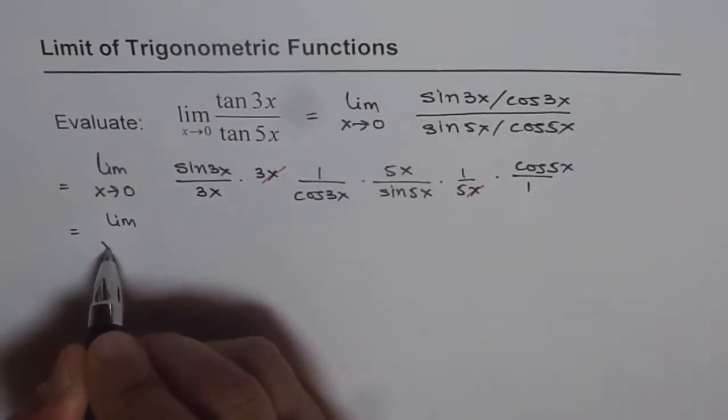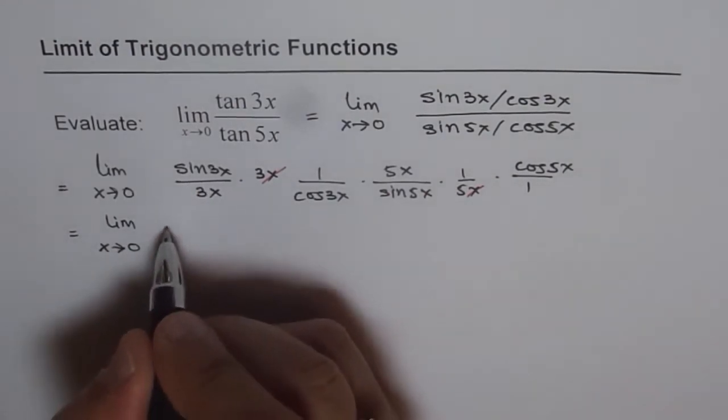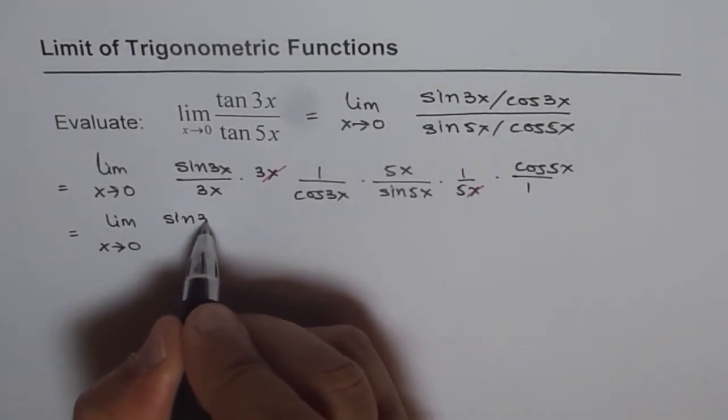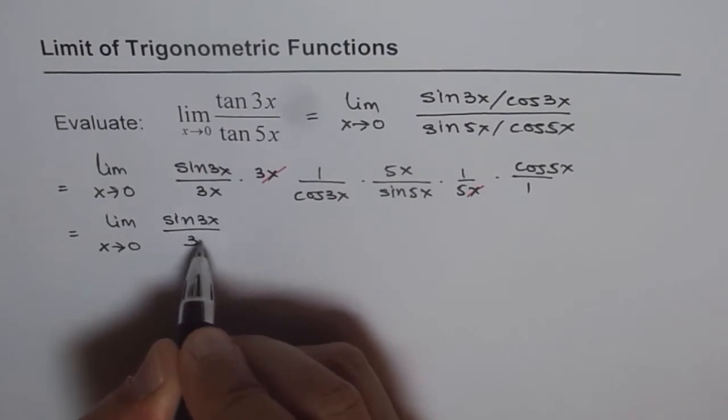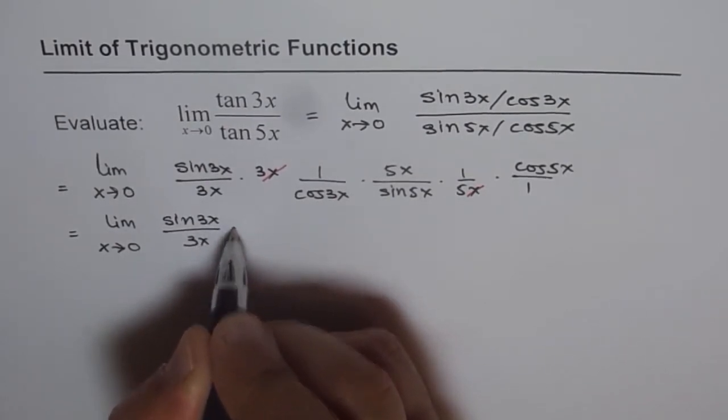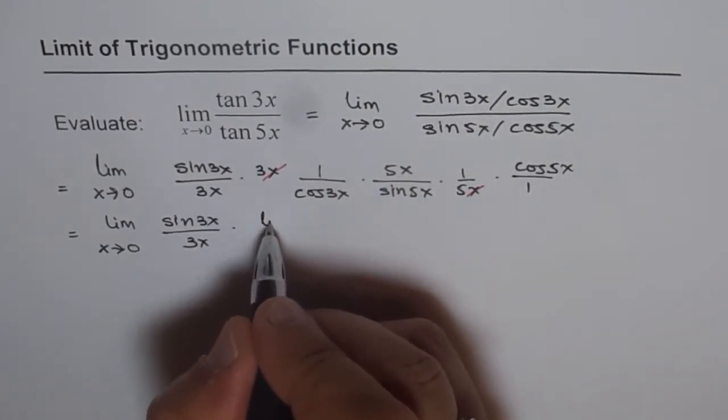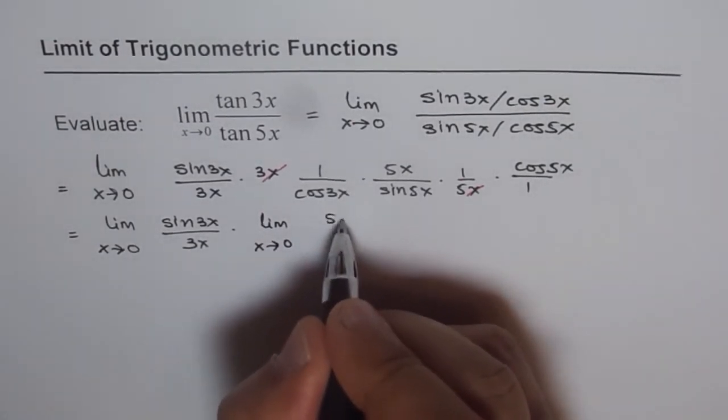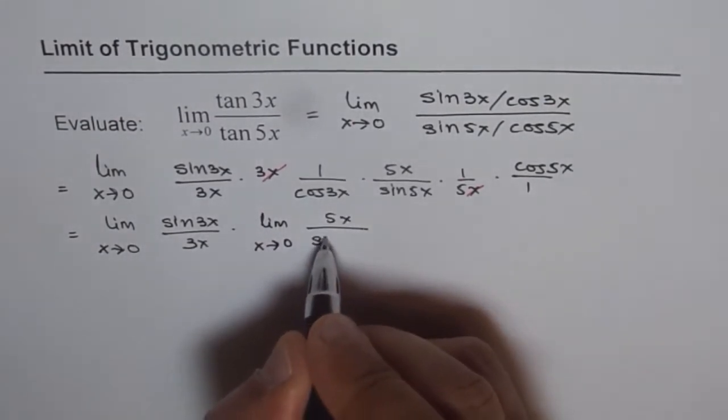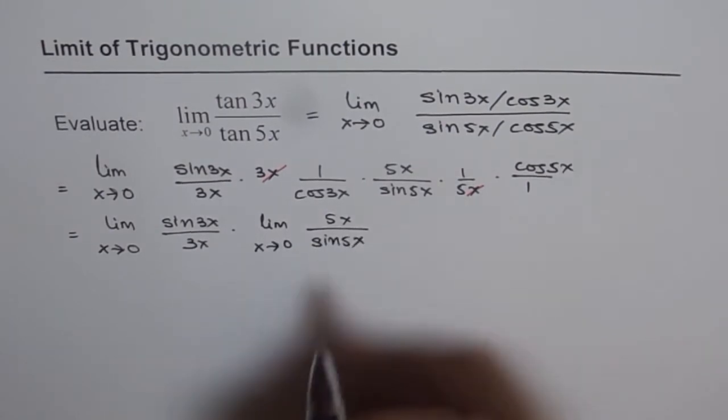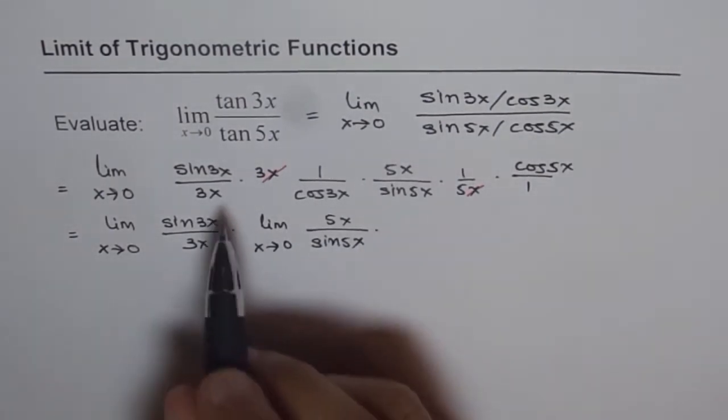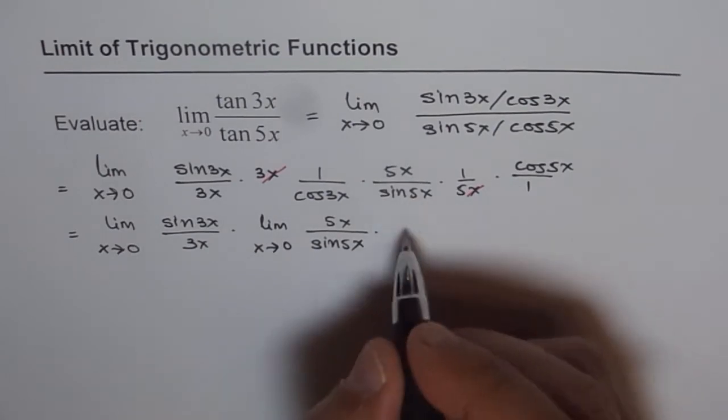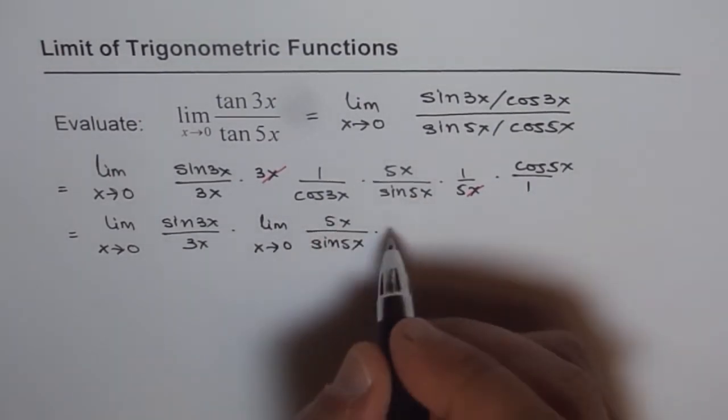Limit x approaches 0 for sin 3x over 3x times limit x approaching 0 of 5x over sin 5x. And then we have cos 5x over sin 3x.